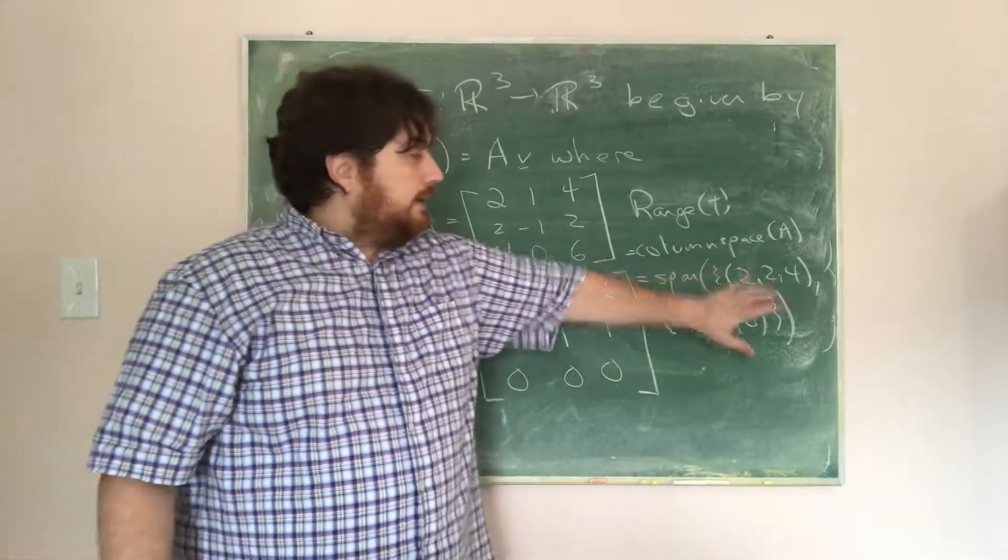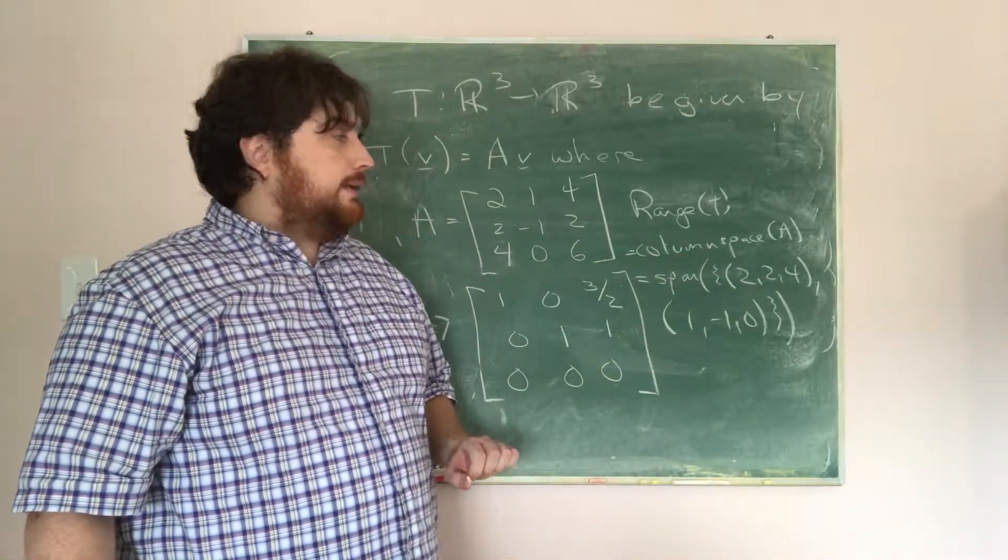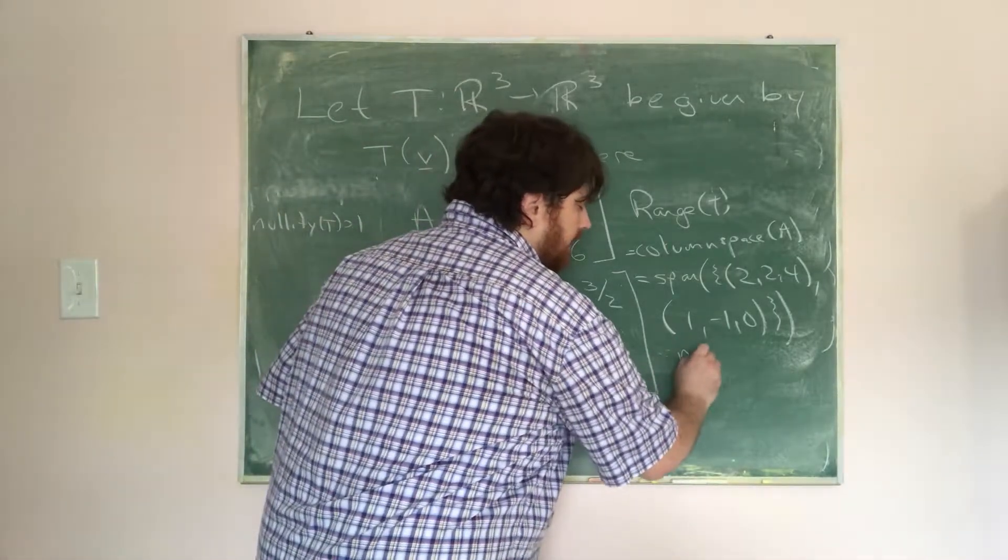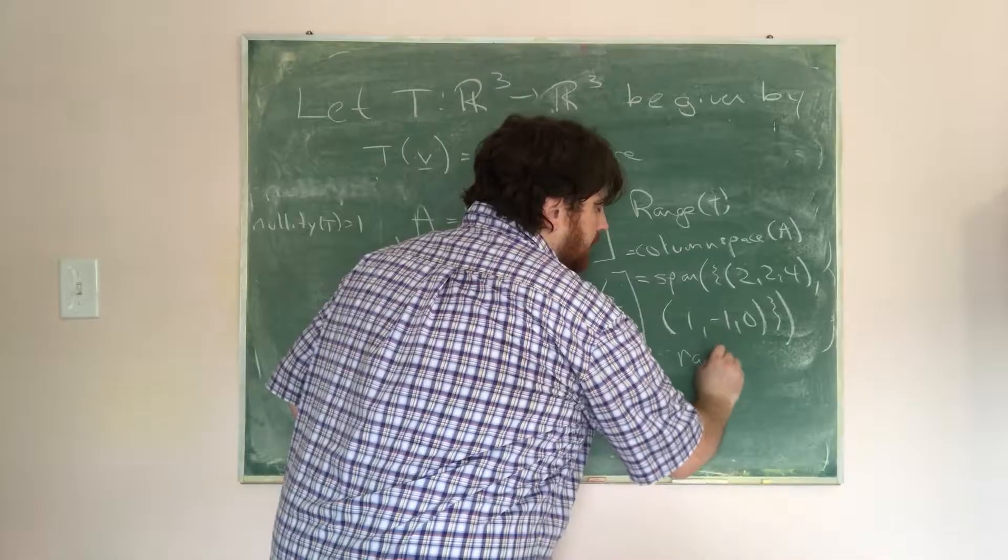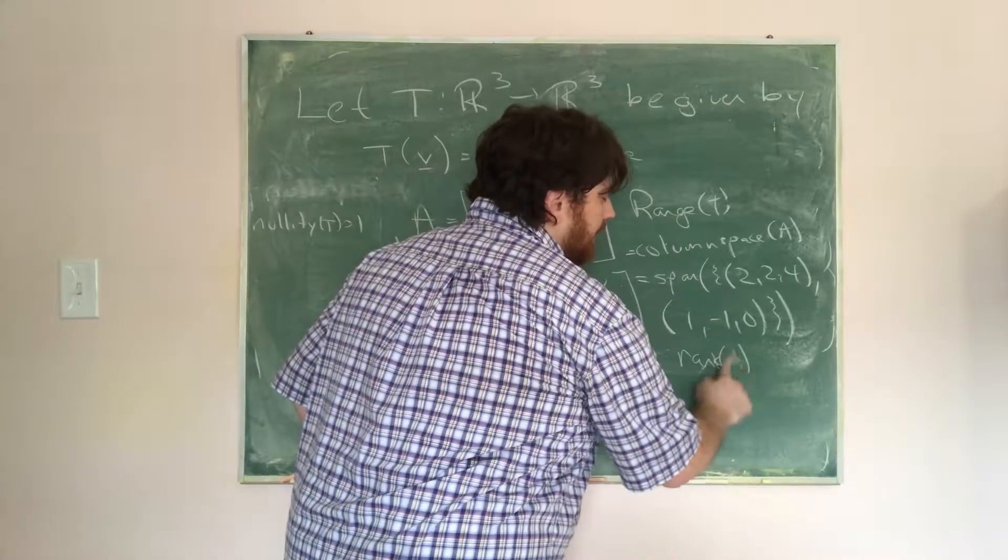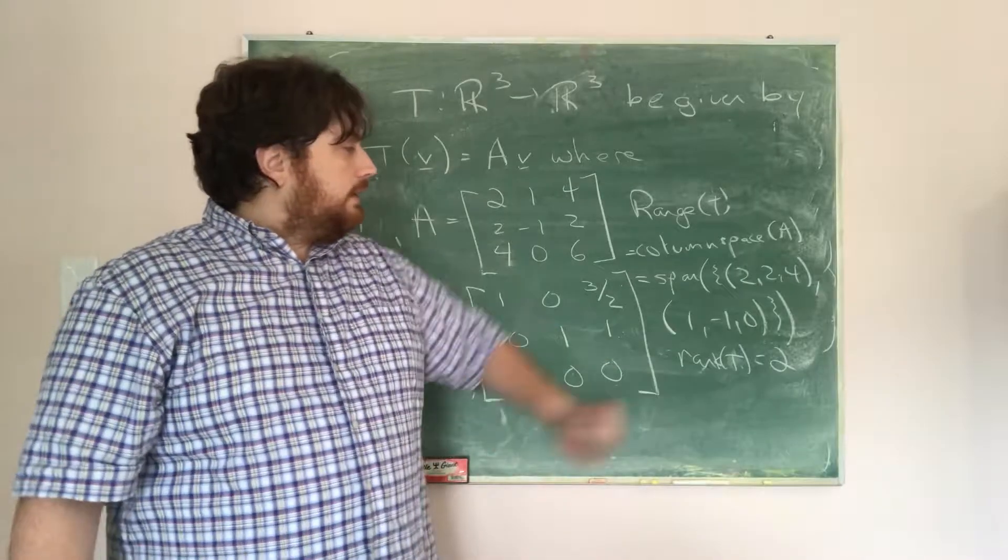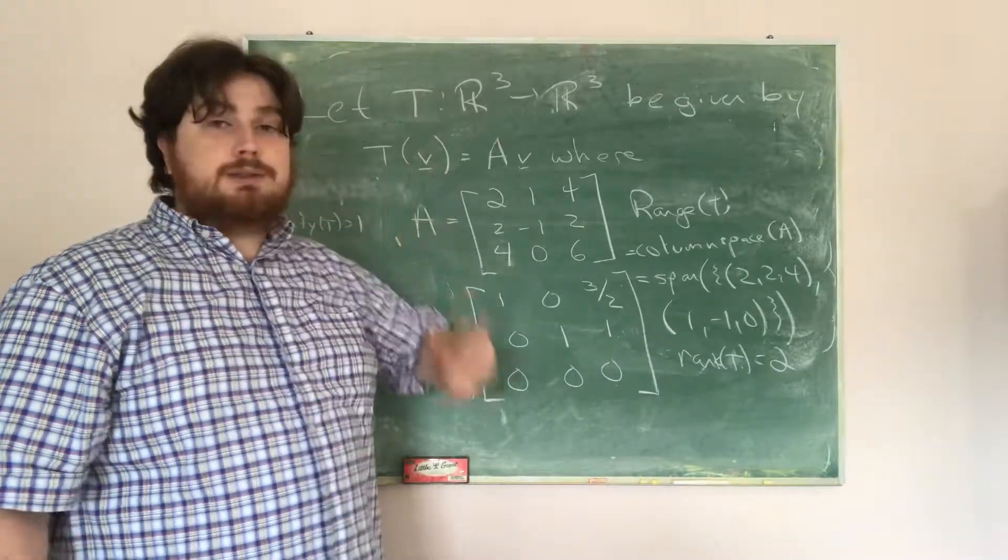Now, because the dimension of the range is 2, we would say that that means the rank of T, which is also equal to the rank of A, is equal to 2. So the rank of this linear transformation is indeed 2.